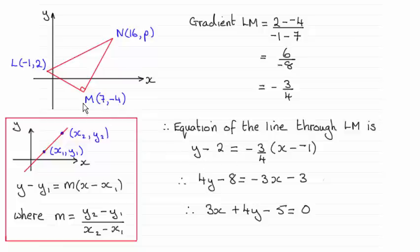So we've got Y minus Y1, Y minus 2, equals the gradient minus 3 quarters times X minus X1, minus minus 1 there.